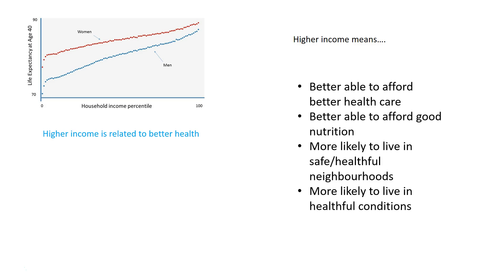You're more likely to live in healthful conditions if you're wealthy — maybe there's a gym near you, grocery stores closer to you, and friends more likely to behave in healthy ways. That's a big one, actually. We can best predict your healthy behaviors based upon the behaviors of the people you associate with. If you surround yourself with wealthier, better educated people with better behaviors, you're more likely to emulate those behaviors as well.